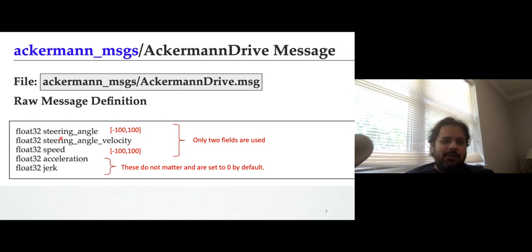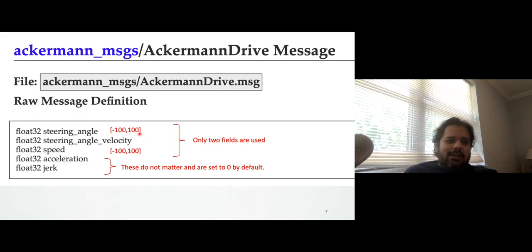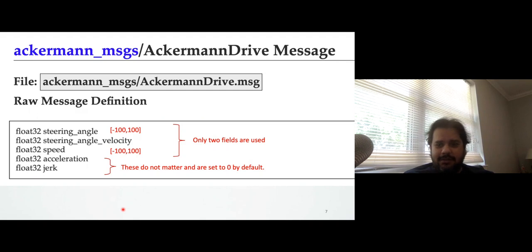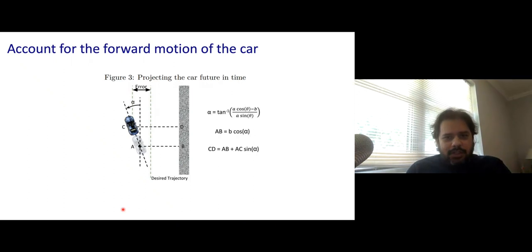The AckermannDrive message structure: only two values are used by the virtual F1/10 and the real car as well. We only care about the steering angle, which is a value between negative 100 and 100 — note these don't correspond to degrees or radians, it's a mapping to a physical turning angle. Similarly, the speed also has to lie between negative 100 and 100. All other fields of this message — such as acceleration, steering angle velocity, and jerk — do not matter; the code doesn't even parse these.